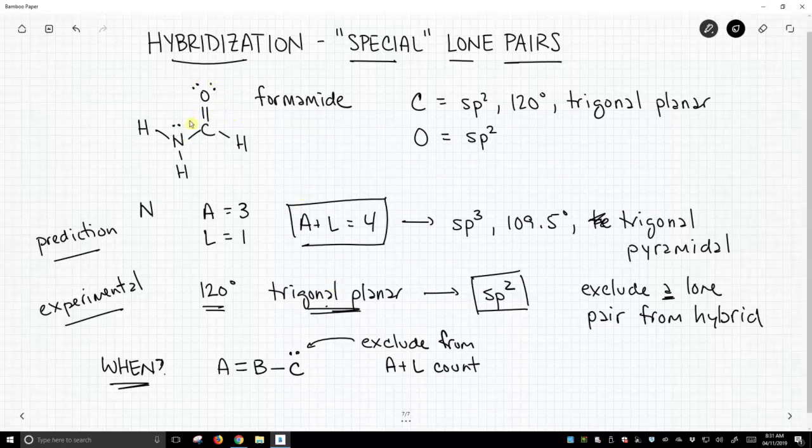And as you can see in our molecule up towards the top of the screen, in formamide, we have a double bond attached to an atom with a lone pair. So this is a case where we're going to exclude that lone pair.